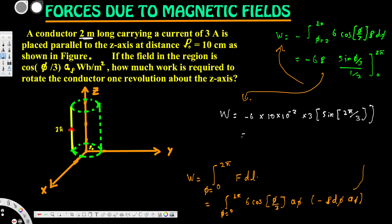Now if we simplify and solve for this one, this is going to give us negative 1.559 Joules. So this is going to be the work required to rotate the conductor one revolution about the z-axis. And that's how we do this kind of problem. I hope this helps. Thanks for watching.